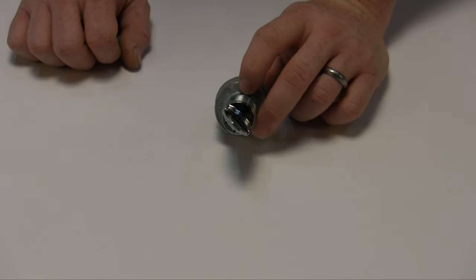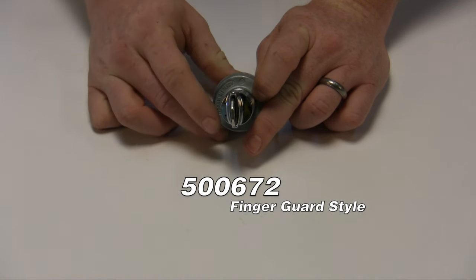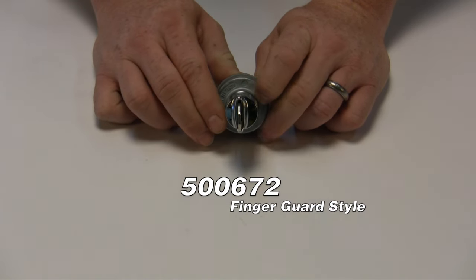The tumbler that's currently installed in this switch is the style with the finger guard. It's a 500672.